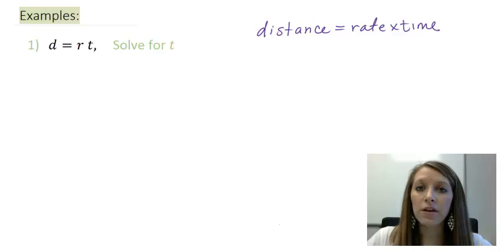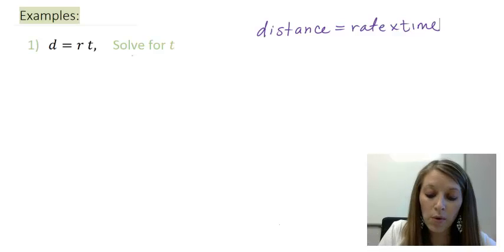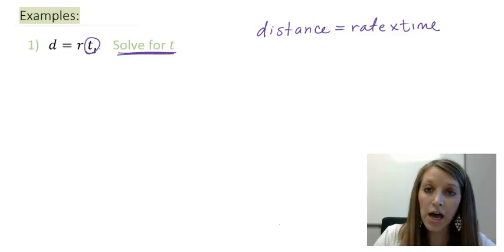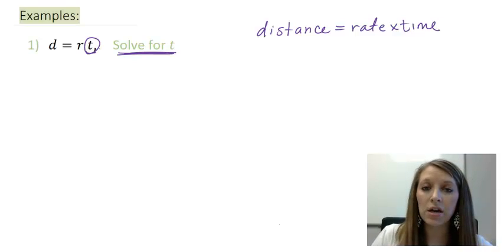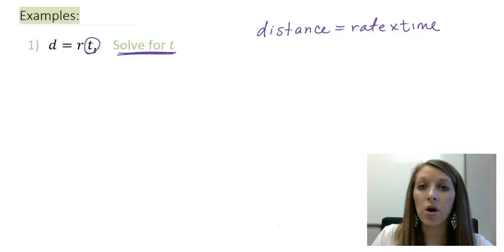So if you want to figure out how far you have traveled, you take the time it took you to get there times the speed that you are traveling at. But let's just say we want to do the alternative. We want to solve for t. So we want to figure out how much time it took us to get there if we know our distance and our rate, our speed that we are traveling at.